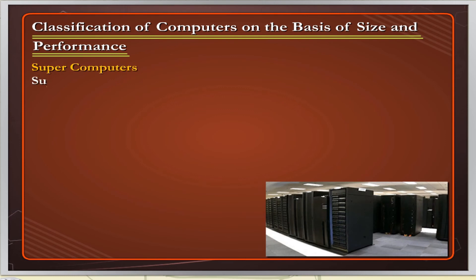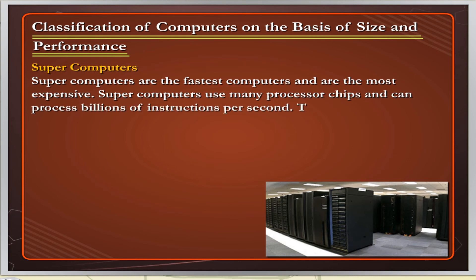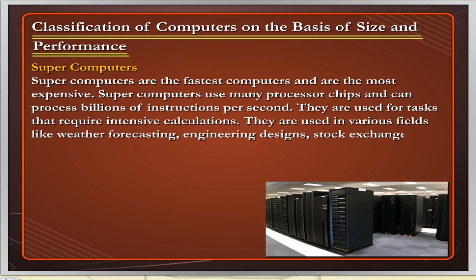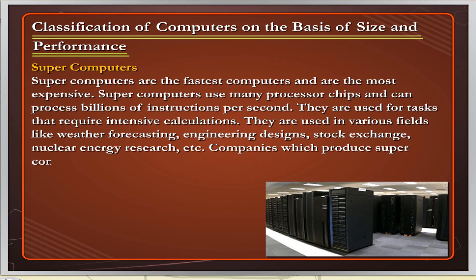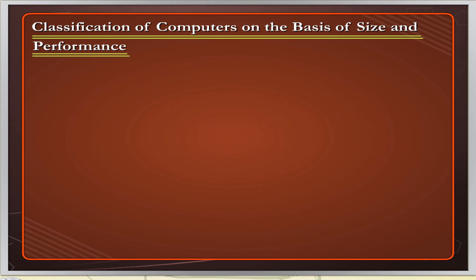Supercomputers are the fastest and most expensive computers. They use many processor chips and can process billions of instructions per second. They are used for tasks that require intensive calculations, in fields like weather forecasting, engineering designs, stock exchange, and nuclear energy research. Companies which produce supercomputers include Cray, IBM and Hewlett-Packard. Param and Anurag are two supercomputers developed by India.